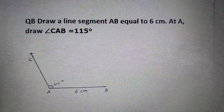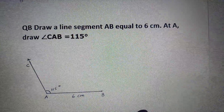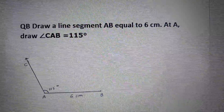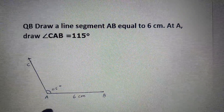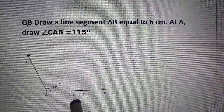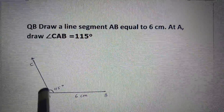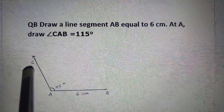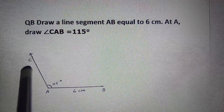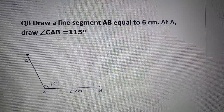Question B: Draw line segment AB equal to 6 cm. At A, draw angle CAB equal to 115 degrees. First draw line segment AB of 6 cm, keep the protractor at point A, mark the 115 degree point, join points A and C and you will get angle CAB equal to 115 degrees.